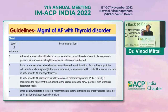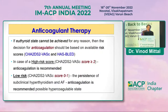For oral anticoagulants, INR should be kept between 2 and 3. Once a euthyroid state is achieved, antithrombotic prophylaxis remains the same as in the hyperthyroid state.